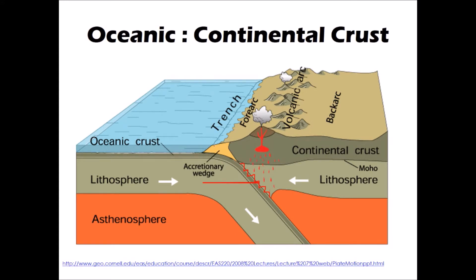Another feature that we find running parallel to the plate boundary is an ocean trench. This is a deeper section of the ocean formed as the oceanic lithosphere dives away beneath the continental lithosphere, creating a narrow v-shaped depression on the sea floor. We can imagine the ocean floor diving away to a greater depth as it starts to meet the continental crust, so we have an ocean trench forming along this boundary, running parallel to it all the way along the point where those two plates are meeting.